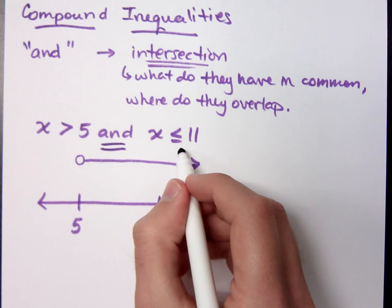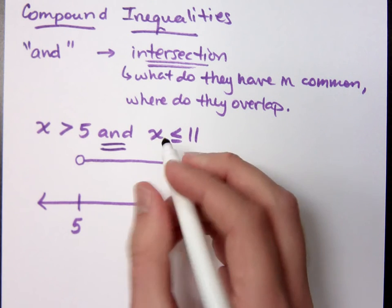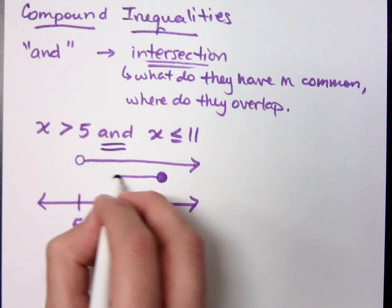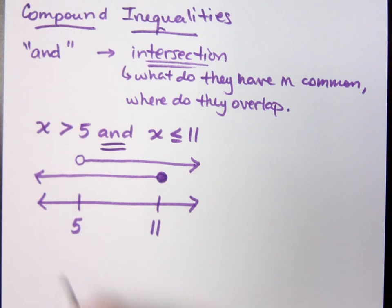What if I had less than or equal to 11? What does that look like? Closed circle. Closed circle going out to the left.